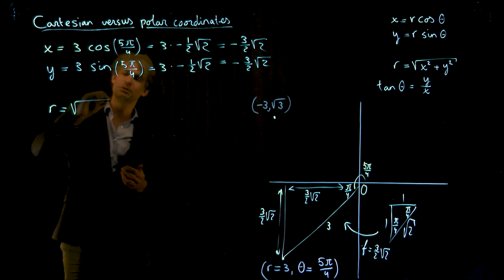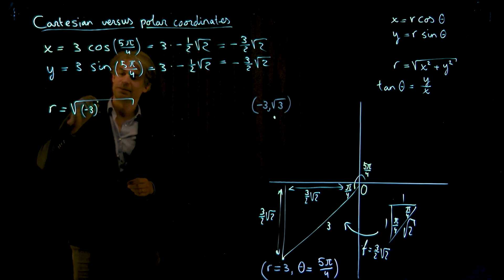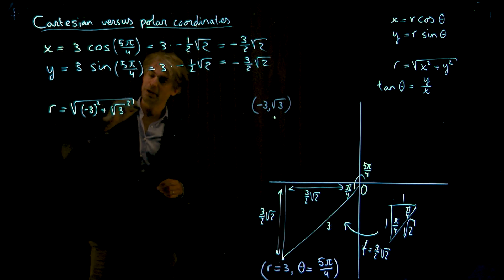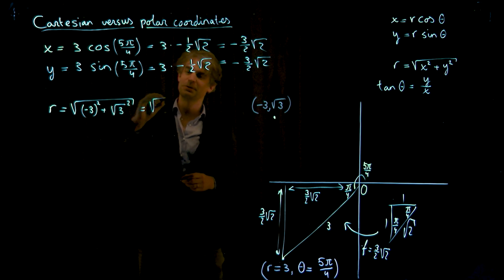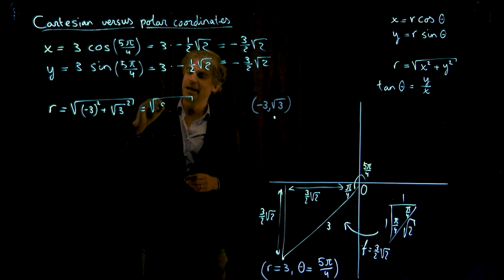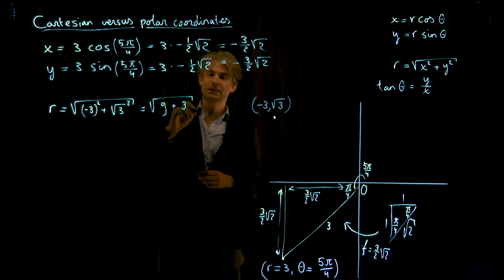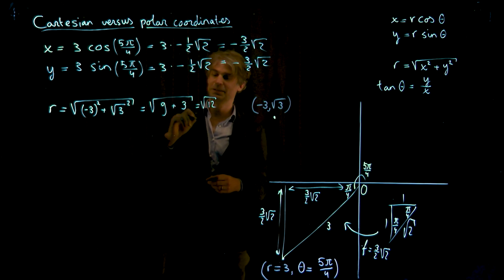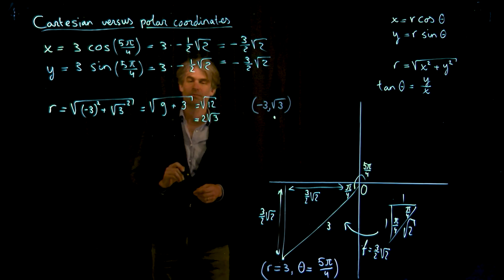Then r equals the square root of minus 3 squared plus the square root of 3 squared. So I get the square root of 9 plus 3, which is of course the square root of 12, and that's equal to 2 times the square root of 3.